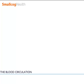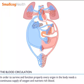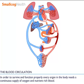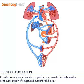The Blood Circulation. In order to survive and function properly, every organ in the body needs a continuous supply of oxygen and nutrient-rich blood.